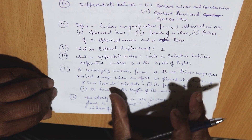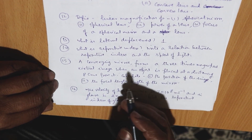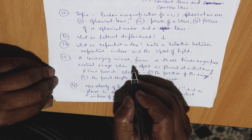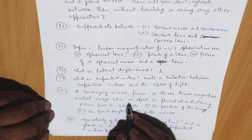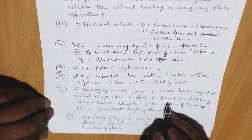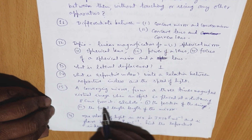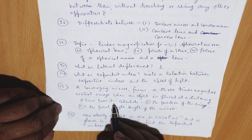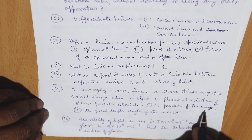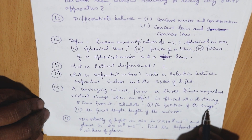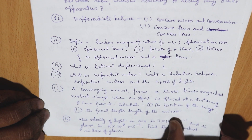Numerical: a converging mirror forms a three-times magnified virtual image when an object is placed at a distance of 8 cm from it. Calculate the position of the image and the focal length of the mirror.